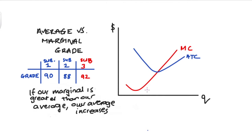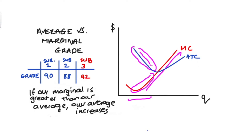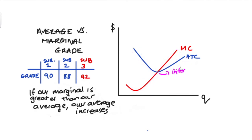Now let's join these two relationships together. If the marginal is below our average, our average is decreasing. If our marginal is above our average, our average is increasing. Since our marginal cost curve is for the most part increasing, it will initially be below the average — causing the average to decrease — but at some point it will become higher than the average, at which point the average will stop decreasing and start to increase. The point of intersection between the curves will therefore be exactly at the turning point where the average curve is at its minimum.